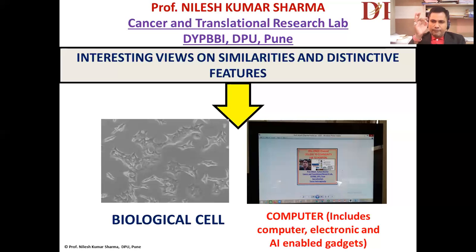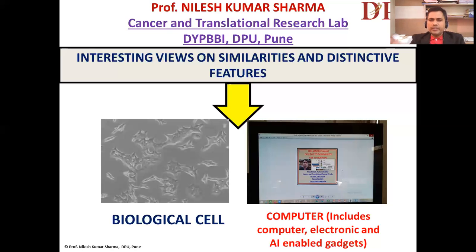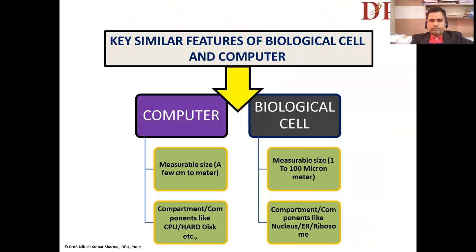I use the word 'unit' because biology students know that cells are defined as structural and functional units. On the other side, a computer system is also a unit where information and data are processed and output is generated. Let me now start one by one with very interesting points — first the similarities between the biological cell as a system and the computer system.